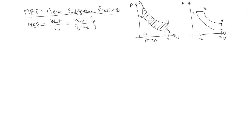To understand the graphical or physical meaning, rewrite the equation as: W_net equals MEP times (v1 minus v2). This is the equation for work done in the PV plane — a pressure times a delta v — which is the equation for a rectangle.